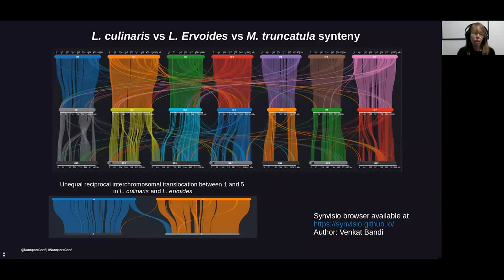We can also visualize synteny between the genomes, as well as Pisum, the closest sequenced relative. Previously, we had known there was a translocation between chromosomes 1 and 5, but we were unsure if it was reciprocal or not due to the low fidelity in the interspecific genetic map. But by zooming in on those two chromosomes, as seen below, we can now see that it is reciprocal, but uneven. We also have all the sequence around the translocation breakpoint, which enables us to properly characterize that region.